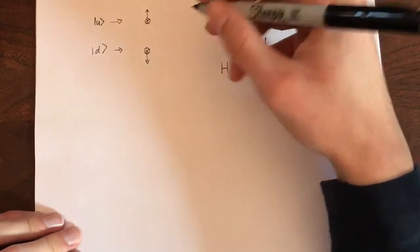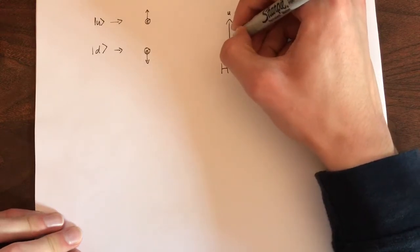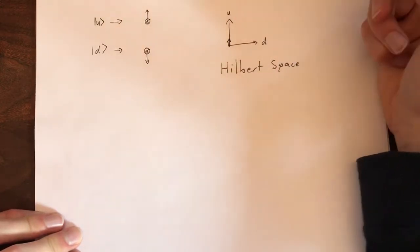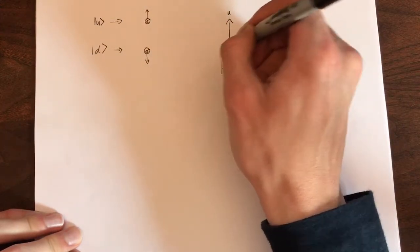So, if we were to measure an electron spin-up, we would represent that as a ket vector pointing this way, with length one. And if we measured it as down, it would be pointing this way, with length one.